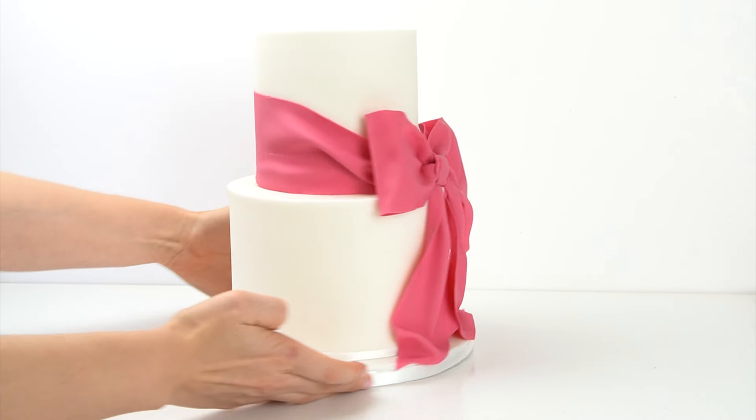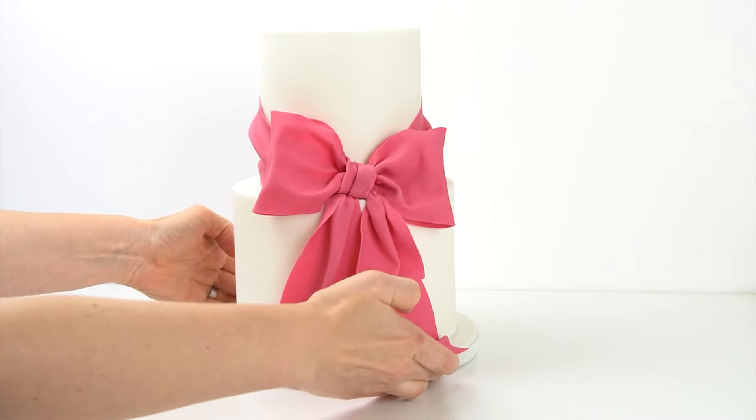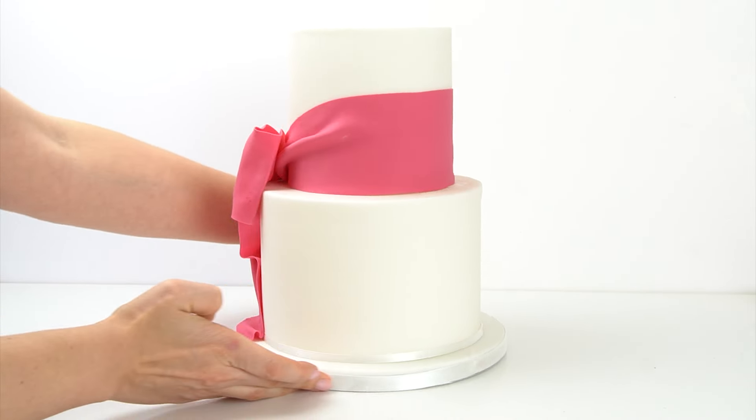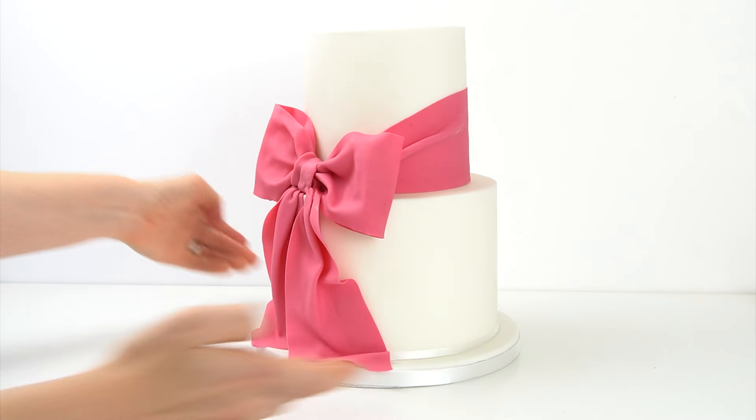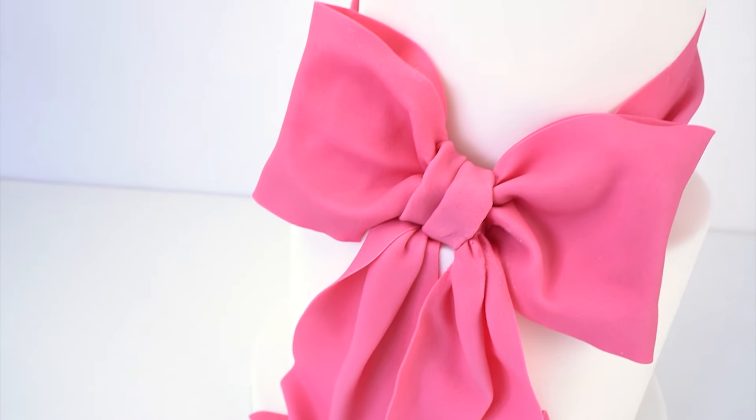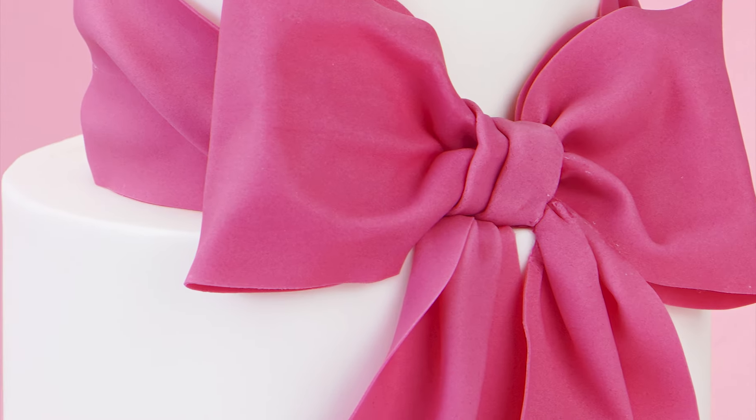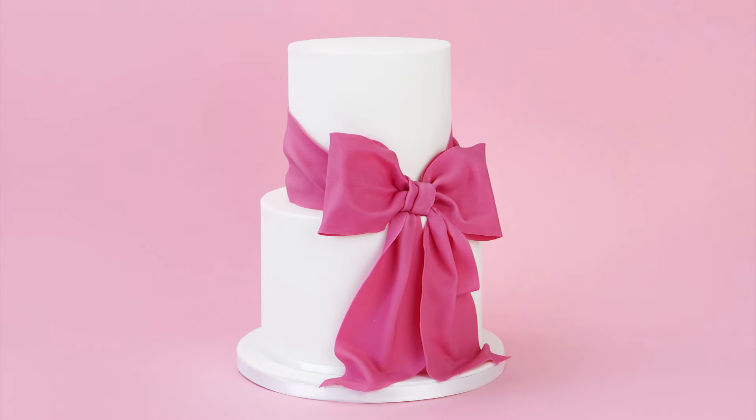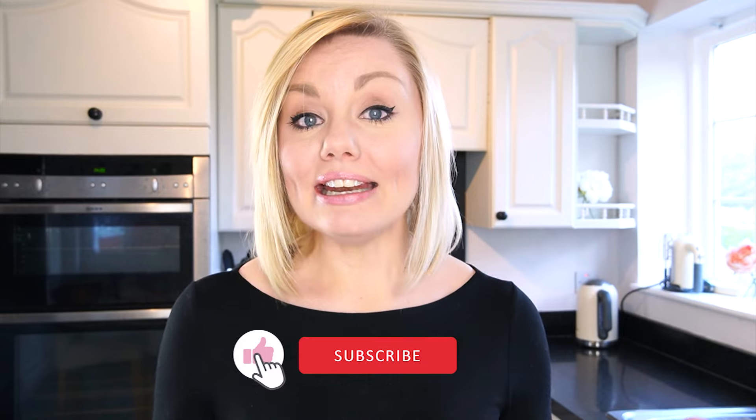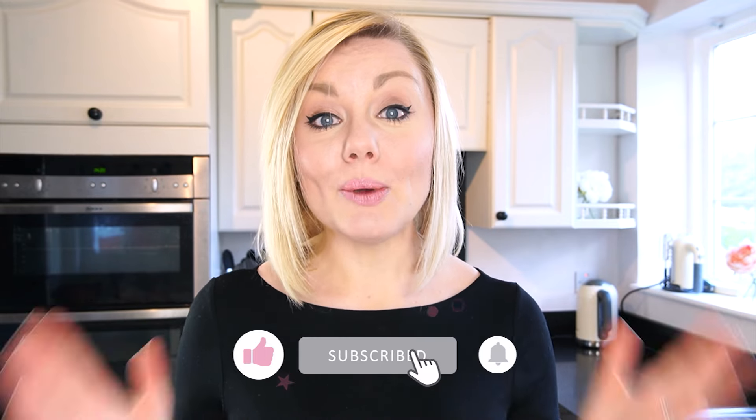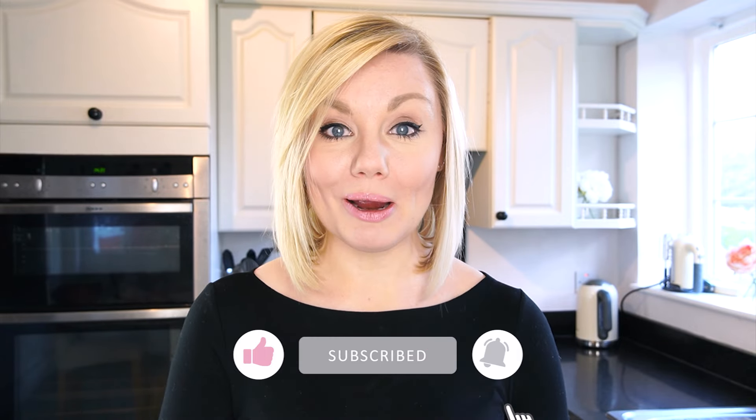Here we have this finished two-tier cake with this giant pink bow on the side. Don't forget you can make this bow in any color and in any size to match the theme of your cake. I really hope you've enjoyed this video tutorial and will be able to use it to make your own gum paste bows. If you have enjoyed the video, as always please don't forget to hit that like button. If you'd like to see more videos like this and you haven't already, then don't forget to subscribe to the Cakeman's YouTube channel. You can also hit the notification bell next to the subscribe button and this will just alert you every time I upload a new video. So until next time, bye!